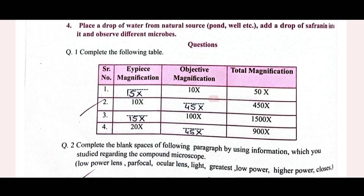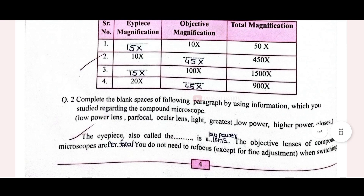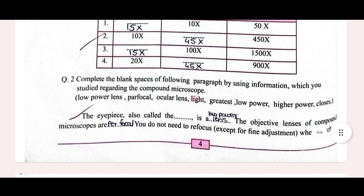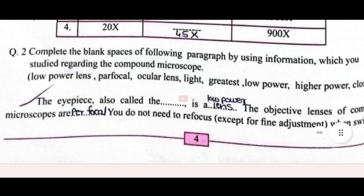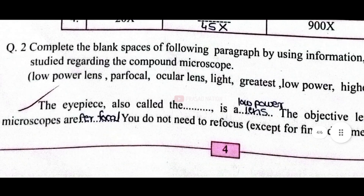Coming on the next slide, we have to complete this table — that is EPS magnification, object magnification, and total magnification. I have written the blank spaces; just copy and paste it. There is also a second question — I will zoom in for you so you can see the blank spaces clearly.